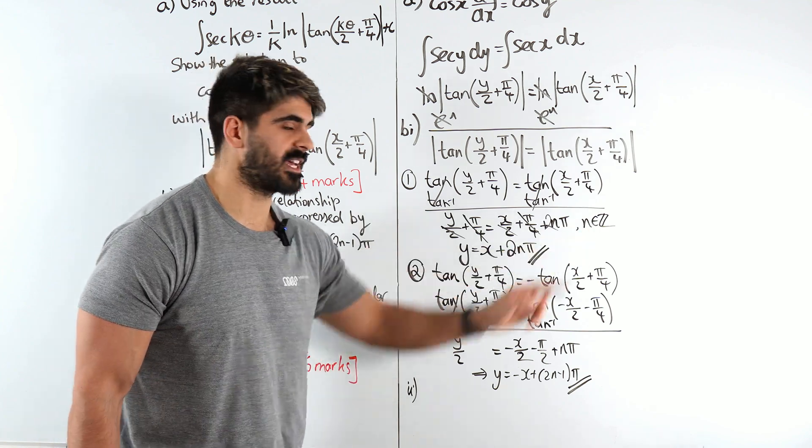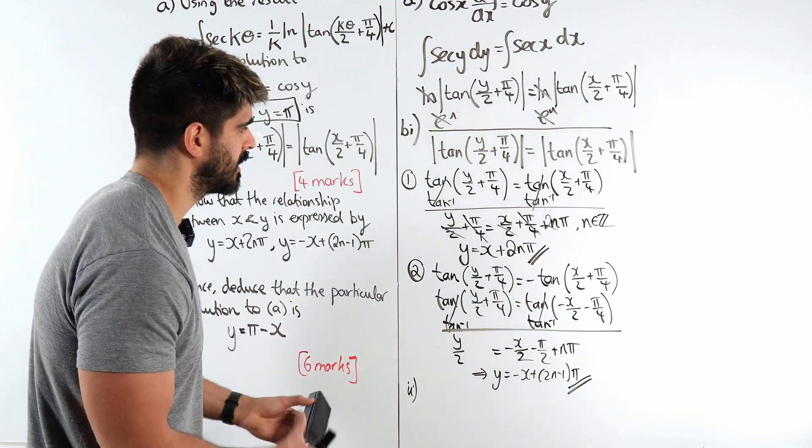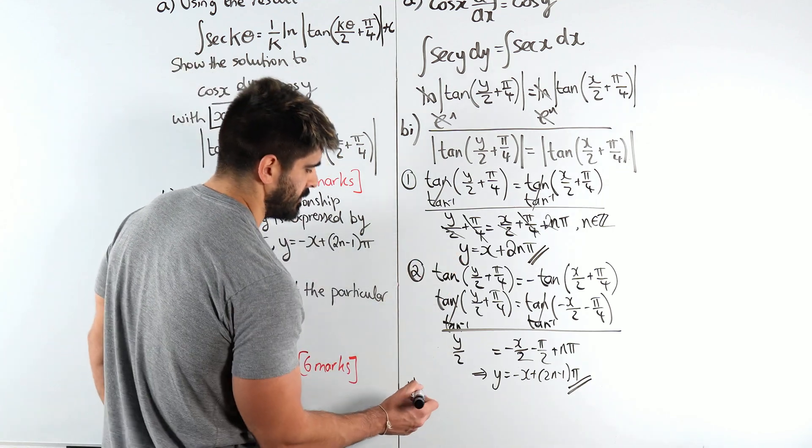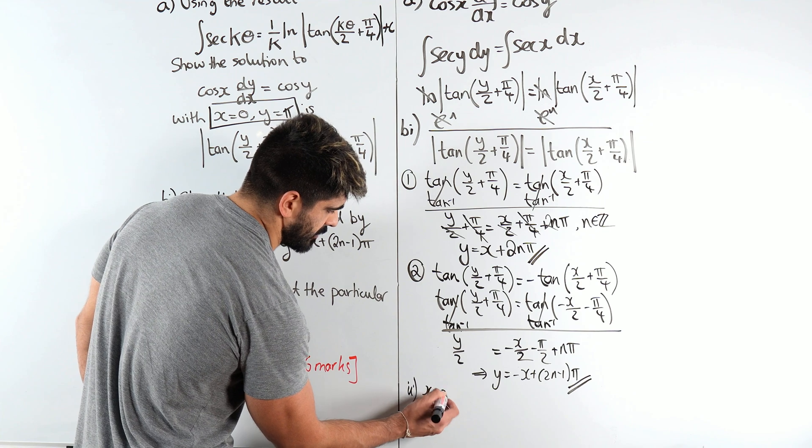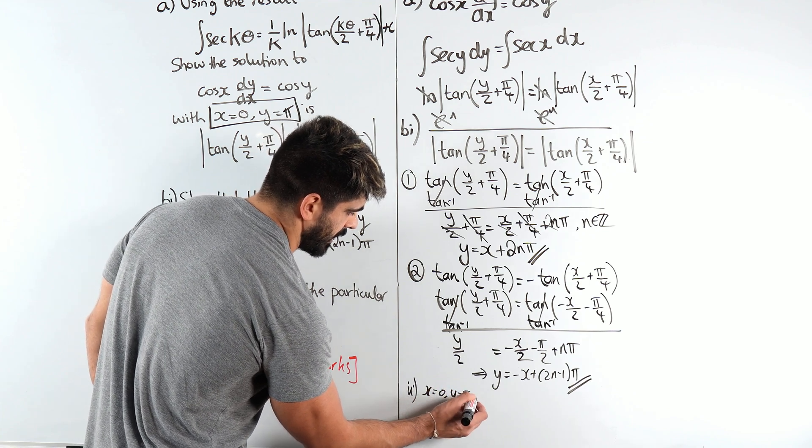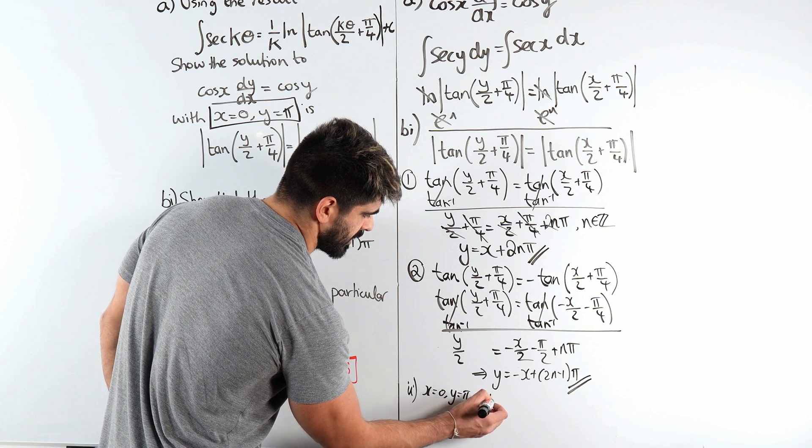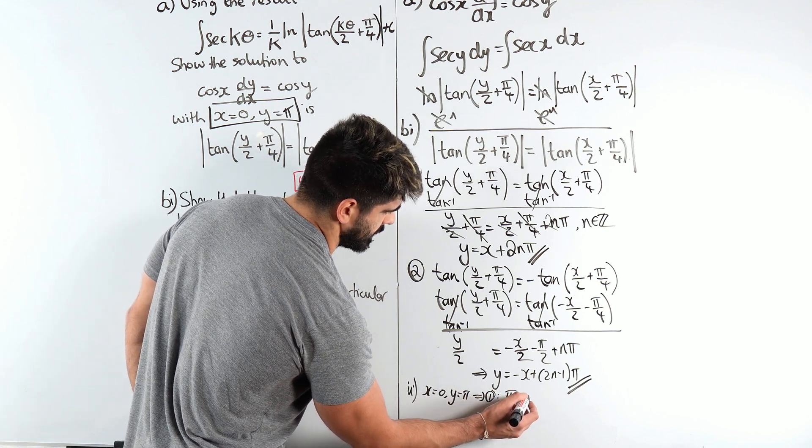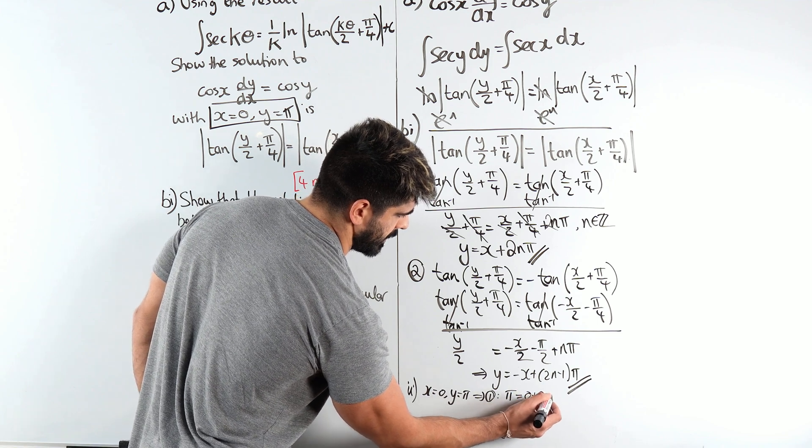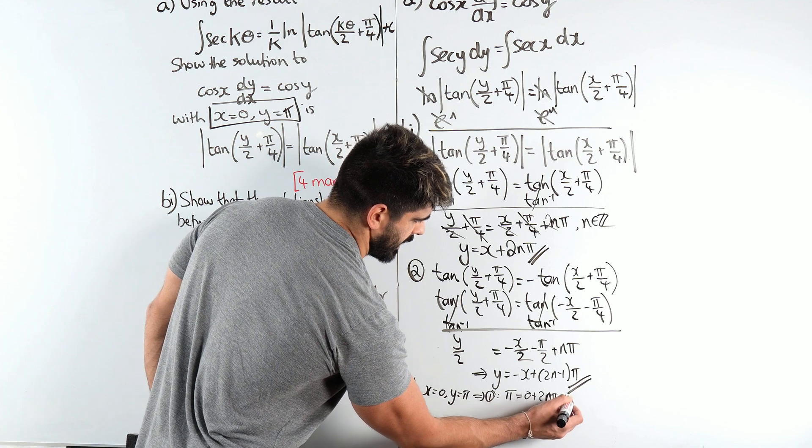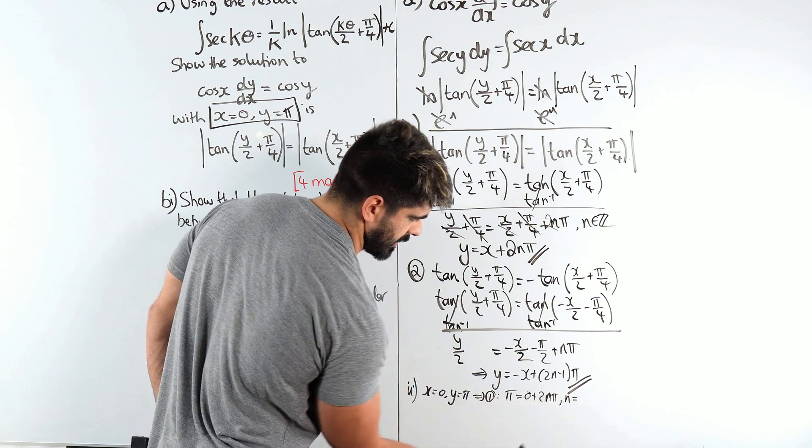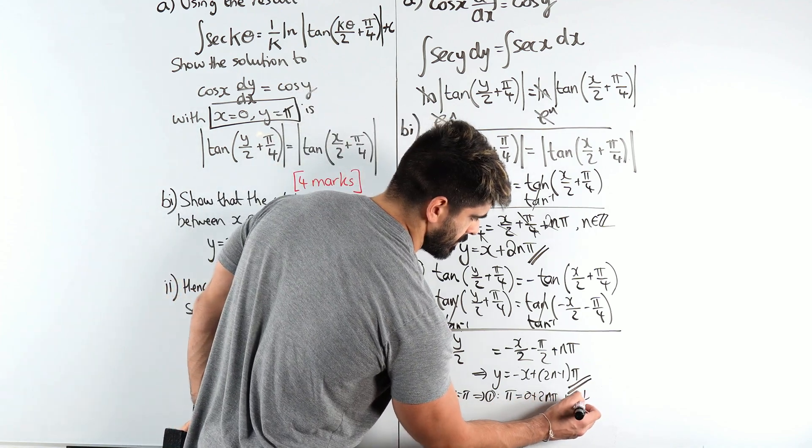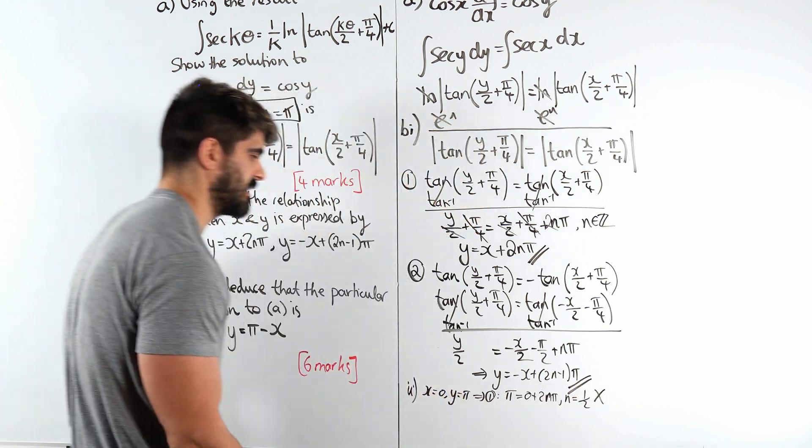So if we have x is zero, y is pi into the first equation, we would get pi is zero plus 2n pi. n would be a half, right? Which is not possible as n is an integer. So it has to go into the second one.